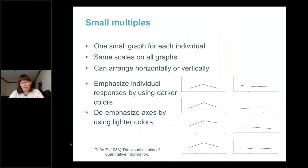The first option is something called small multiples, where you make one small graph for each individual in your data set — it could be an animal, a participant, a sample, and so on. You apply the same scales for all graphs, and it's really important that every single graph in your small multiples has the same scale, because where that line is positioned relative to that standard scale gives you information about how that individual differs from others in the data set.